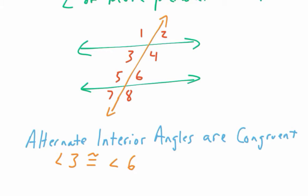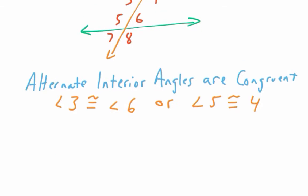So if I have my three here, my six is going to be the other alternate interior angle that's congruent to that. So I could write angle three is congruent, the equals with a little squiggly over it, the tilde, angle three is equal to angle six. Or if you're doing that same sort of thing, you could say, or angle five is congruent to four.